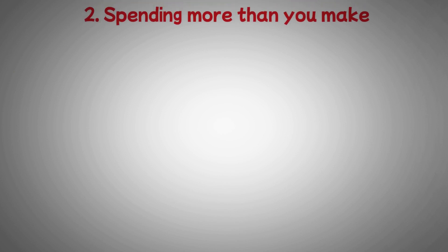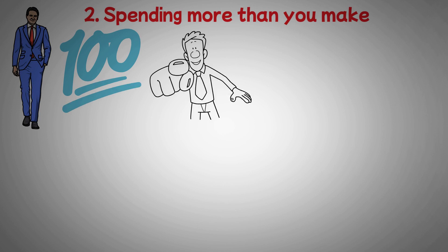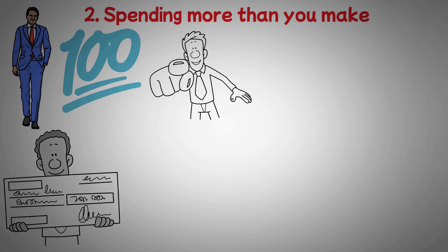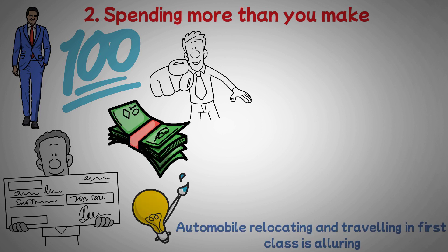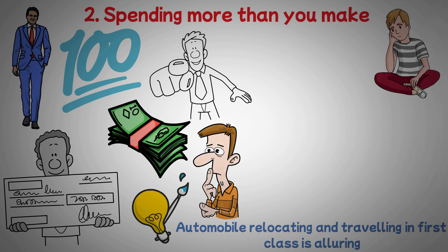Two: spending more than you make. The temptation to do this, especially as a young adult, can be great. When you are earning a steady paycheck for the first time in your life soon after college, it can be tempting to spend your money. The idea of getting that new automobile, relocating, and traveling in first class is alluring. But the issue is that if your salary is insufficient to cover these expenses, you frequently find yourself living paycheck to paycheck.